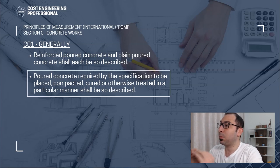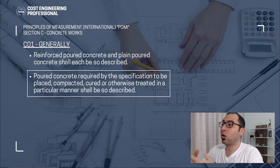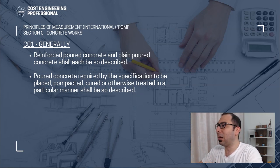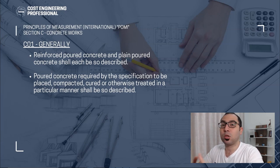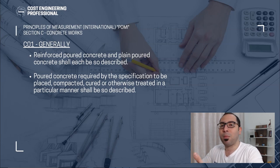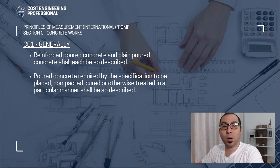Poured concrete required by specification to be placed, compacted, cured, or otherwise treated in a particular manner shall be so described. So if you need some special treatment, placing, compaction, or anything for your concrete works, this has to be described in your BOQ. For example, if you are using ready mix concrete, you have to specify that, including how it shall be vibrated and treated.